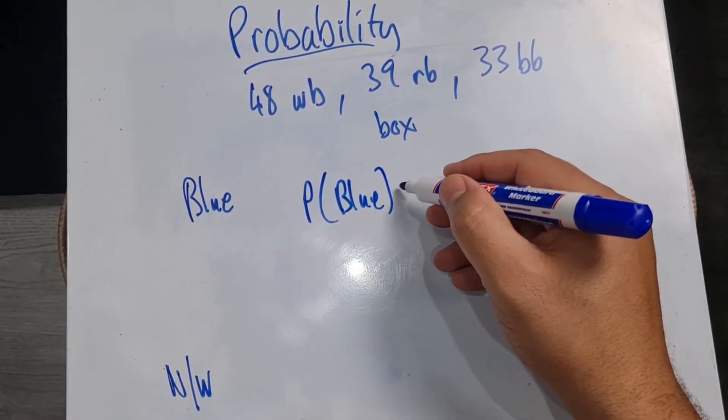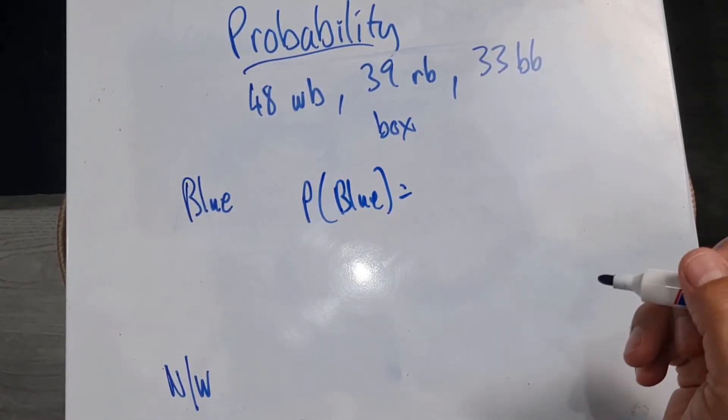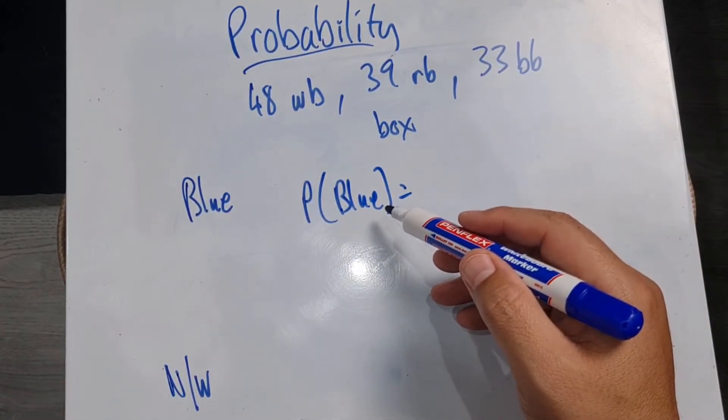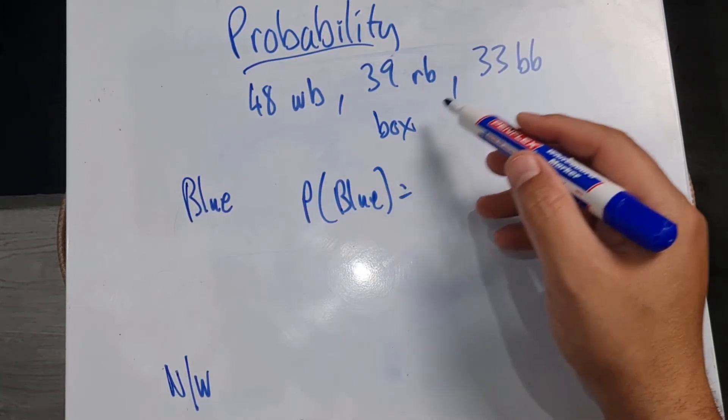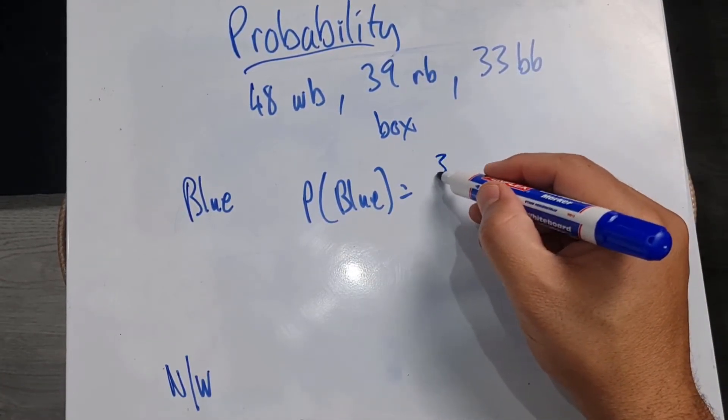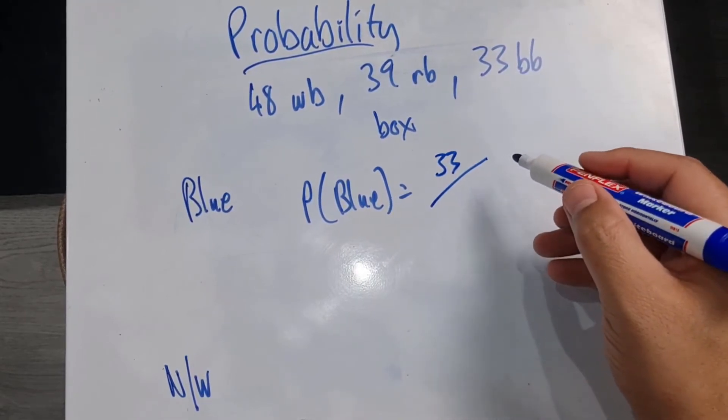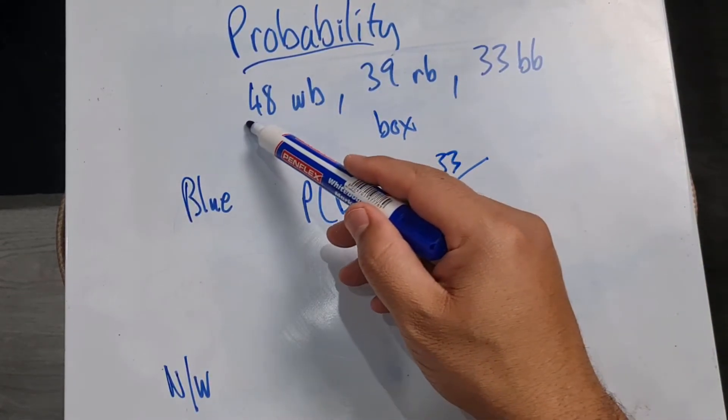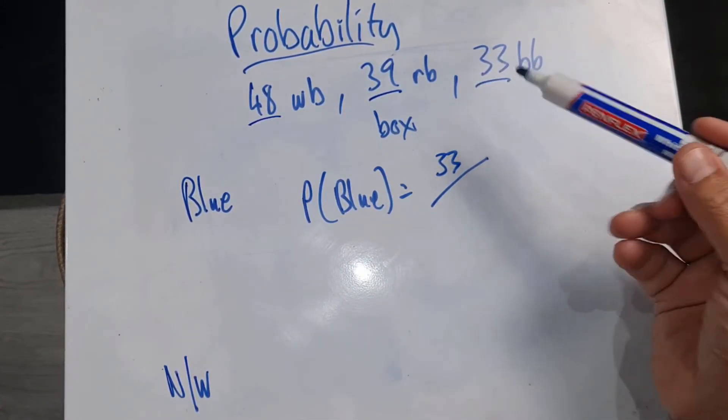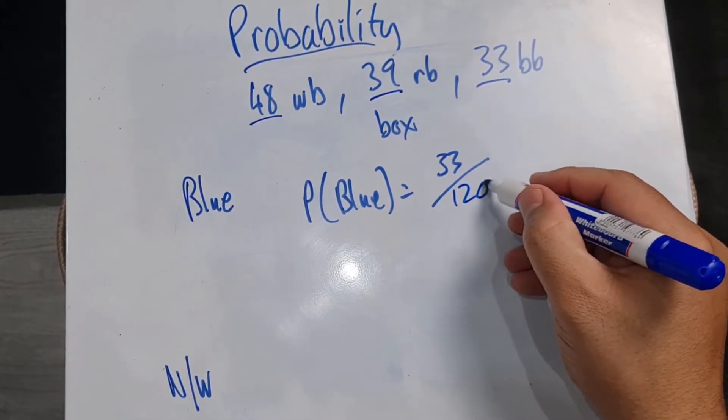I'm going to go blue. And then again, we're looking at the number of ways this event can occur. And how many blue buttons are there? 33. And we're going to divide that by the total number of events, which works out to 120.